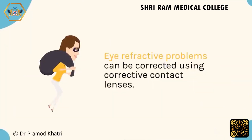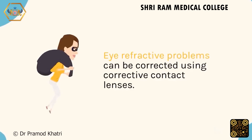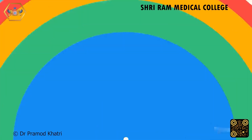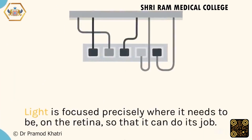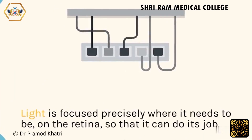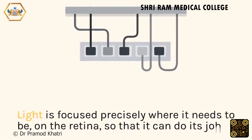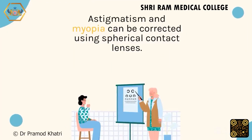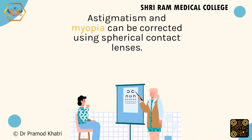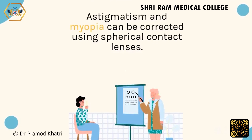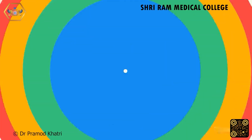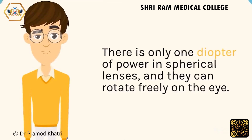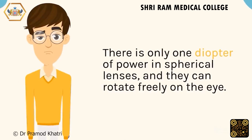Eye refractive problems can be corrected using corrective contact lenses. Light is focused precisely where it needs to be — on the retina. Astigmatism and myopia can be corrected using spherical contact lenses. There is only one diopter of power in spherical lenses, and they can rotate freely on the eye.